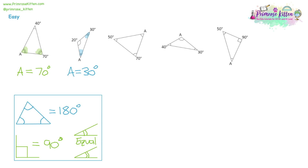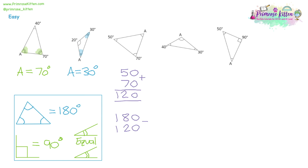Moving on to question three. We don't have any notation telling us any angles are the same size, so we work it out differently using two steps. Step one: add up the angles you've been given — 50 degrees and 70 degrees. Setting up a column addition, 0 plus 0, 5 plus 7 gives 12, so 120 degrees. Step two: we know triangles add up to 180 degrees, so subtract 120 from 180. 0 take away 0, 8 take away 2, 1 take away 1 is 0 — that gives us 60 degrees. So the angle is equal to 60 degrees.